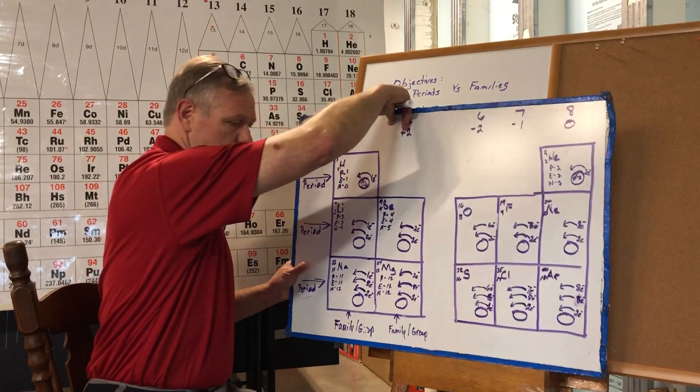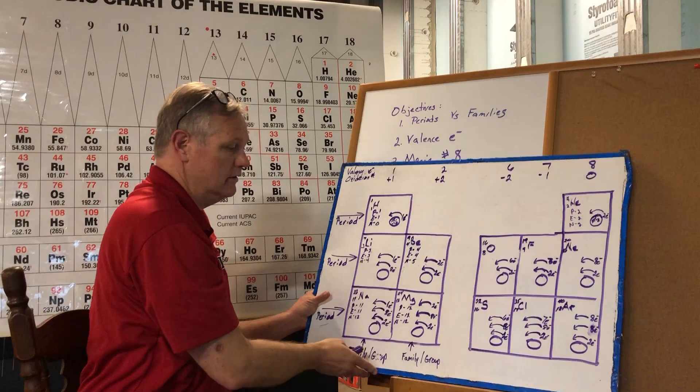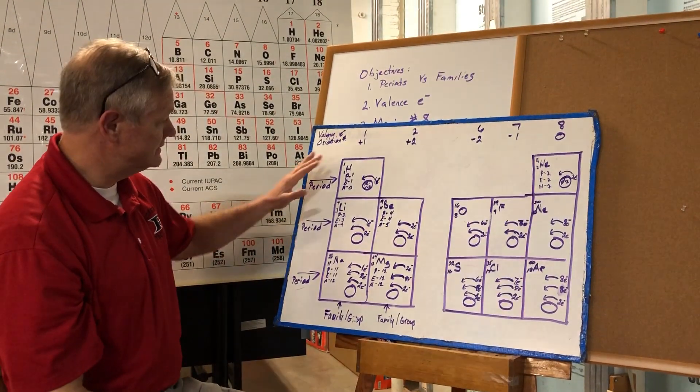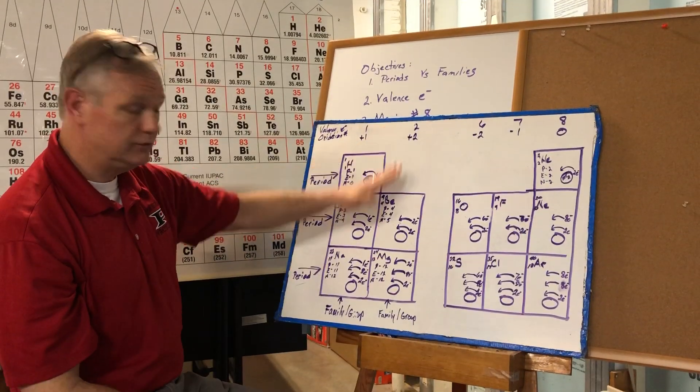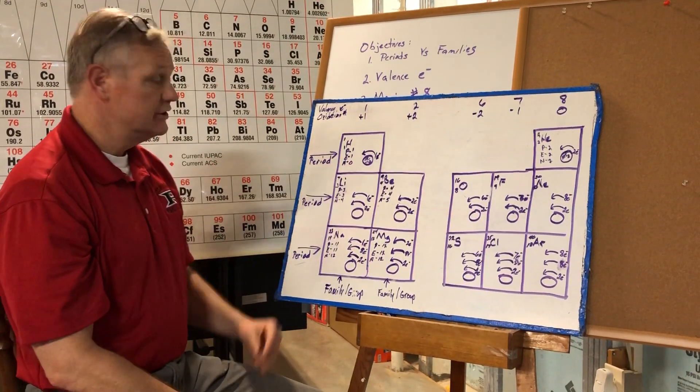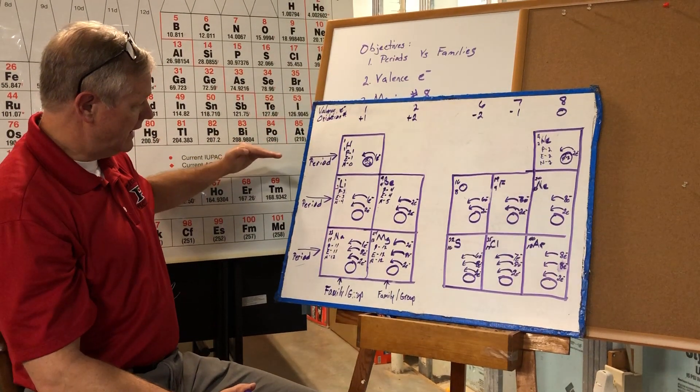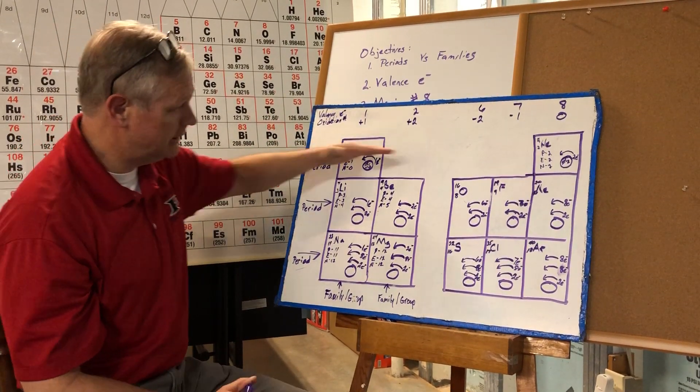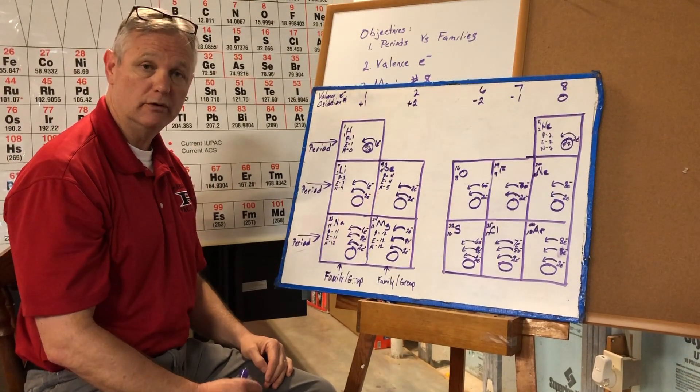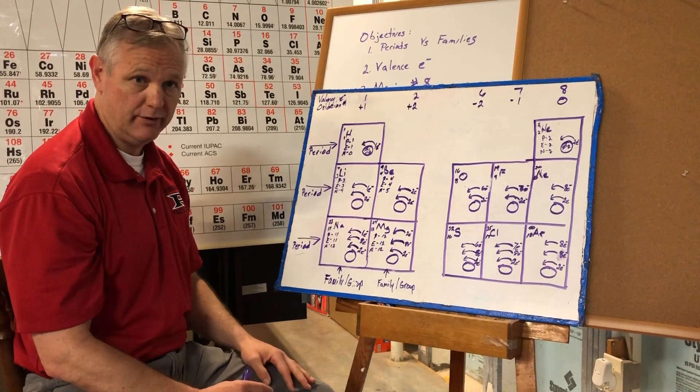All right I've drawn for you a small condensed periodic table. It only consists of the first two columns and then the last three columns. So first of all, what is a period? A period goes across the periodic table. On our periodic table there are going to be seven periods.